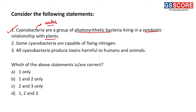Second statement: some cyanobacteria are capable of fixing nitrogen. This is also correct — especially in aquatic ecosystems, cyanobacteria are important bacteria that carry out nitrogen fixation. Third statement: all cyanobacteria produce toxins harmful to humans and animals. This is an incorrect statement because not all cyanobacteria produce toxins — only certain cyanobacteria lead to the production of toxins.